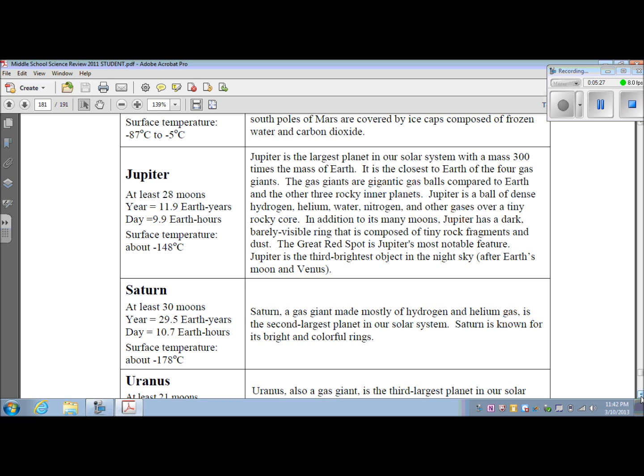In addition to its many moons, Jupiter has a dark, barely visible ring that is composed of tiny rock fragments and dust. The great red spot is Jupiter's most notable feature. Jupiter is the third brightest object in the night sky after Earth's moon and Venus.